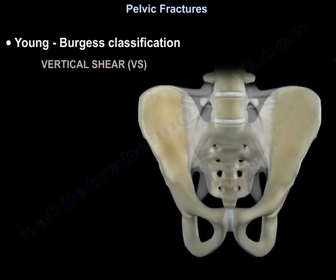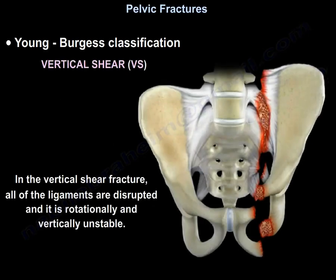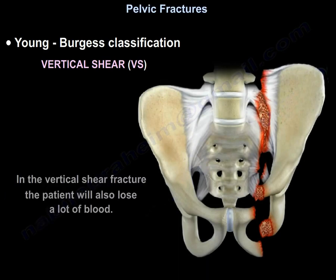In vertical shear, all ligaments are disrupted and the pelvis is both rotationally and vertically unstable. The patient will also lose a lot of blood.